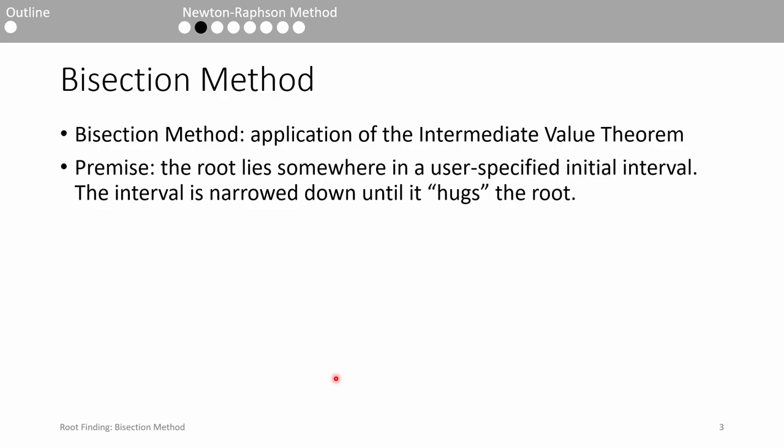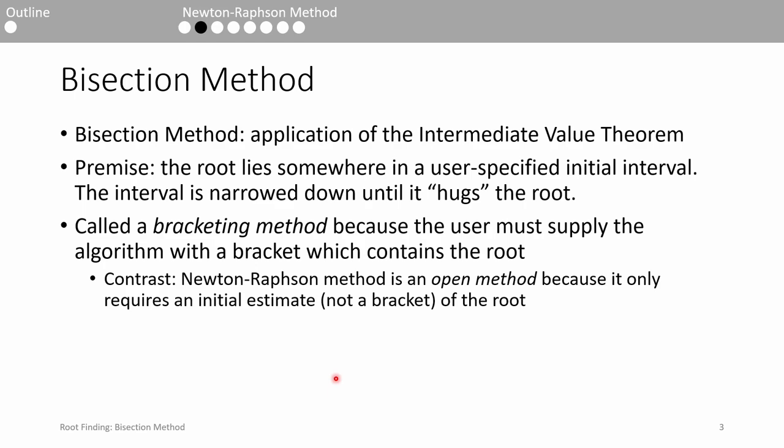Bisection works by continuously checking whether the root lies in a given interval. If you provide the algorithm with an initial bracket which contains the root, the algorithm will sequentially narrow down the length of the bracket until it closes in on the root. Because you must supply an initial interval or bracket, bisection is also referred to as a bracketing method.